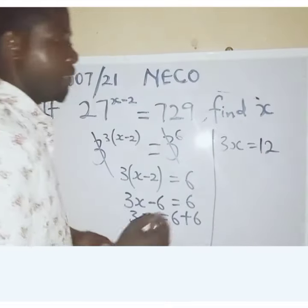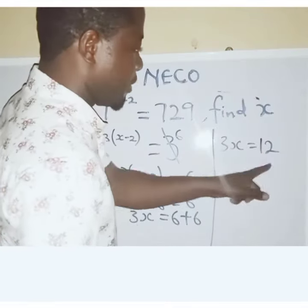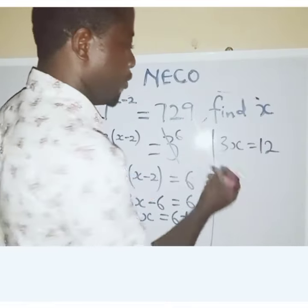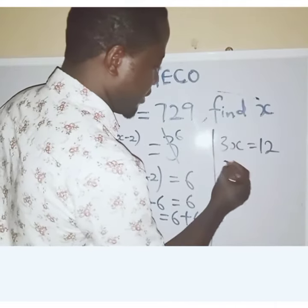So now, the next thing is to divide both sides by the coefficient of x. What is the coefficient of x? That is 3.